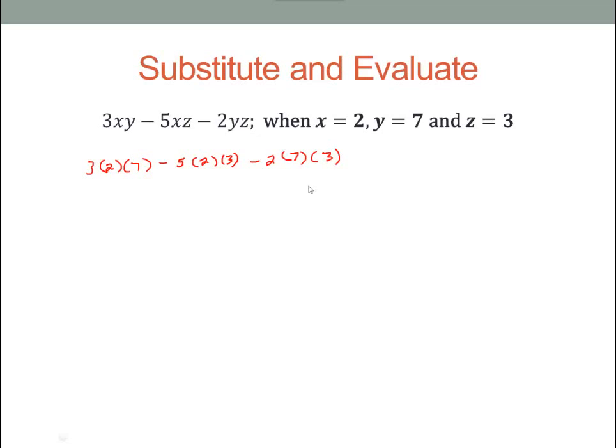So we replace each one of those variables with the given numbers that they state that they are equal to. Then we use the order of operations. We have three groups of multiplication here. 3 times 2 times 7, that is all multiplication. So 3 times 2 is 6, and 6 times 7 is 42.